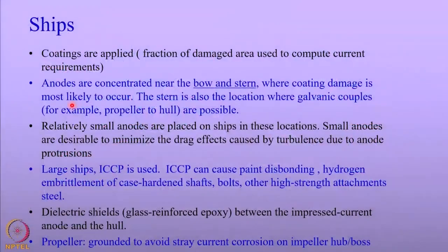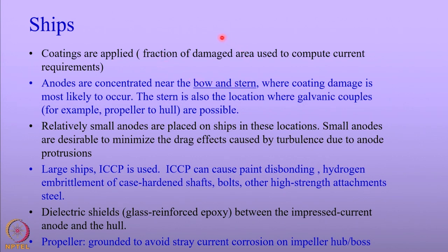Let us come to the last topic of today's lecture — ships. We will look at the general concepts and overall approaches for cathodic protection of ships. Coatings are applied onto ships, but there are certain areas where the coatings get damaged readily. So the current requirement for protecting the ship hull depends upon the damaged area of the ship hull, and the damaged area is used to compute the current requirement for protecting the ships.